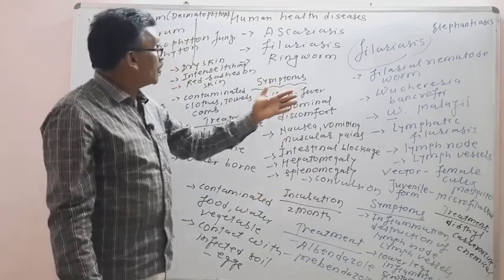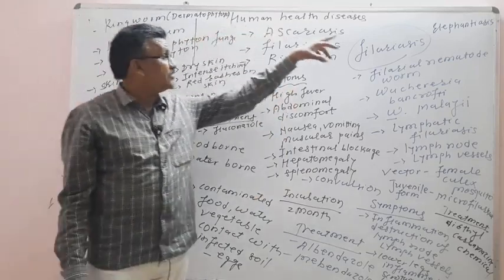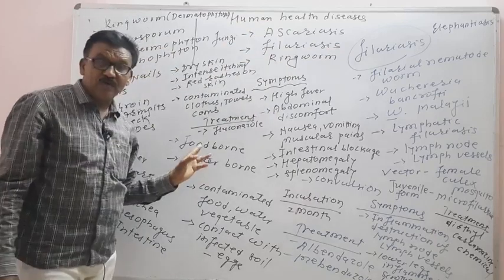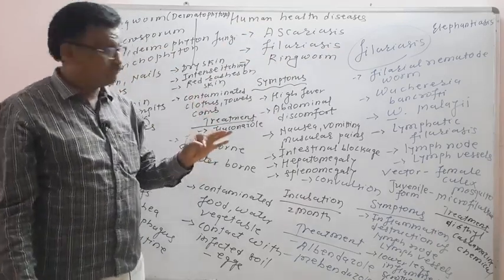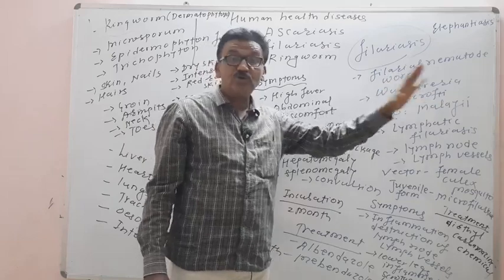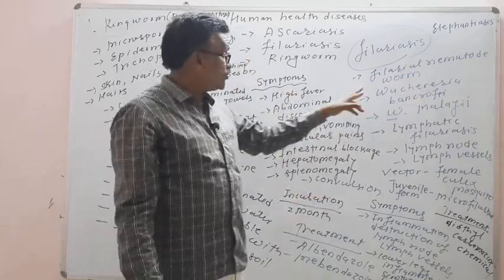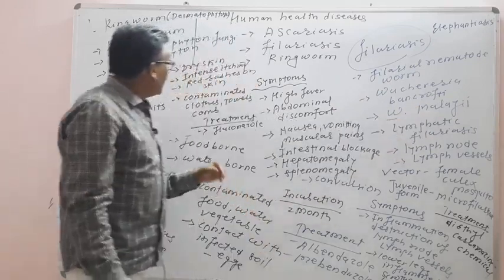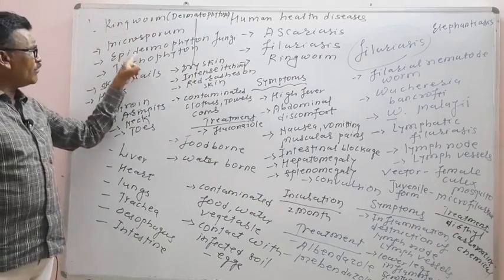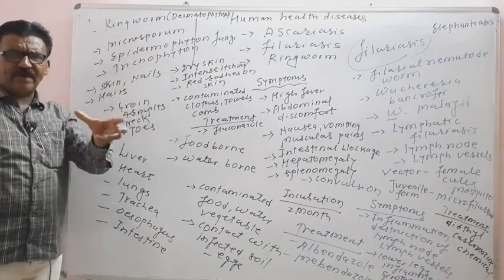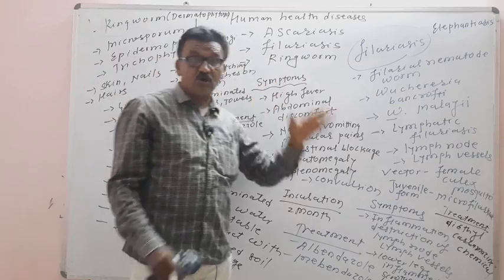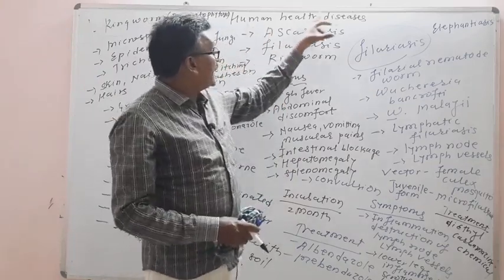These are the three disorders in human health and disease. Ascariasis is caused by the helminth worm Ascaris lumbricoides. Filariasis is caused by filarial nematode worms Wuchereria bancrofti and Wuchereria malayi. Ringworm or dermatophytosis is caused by fungi including Trichophyton, Epidermophyton, and Microsporum.